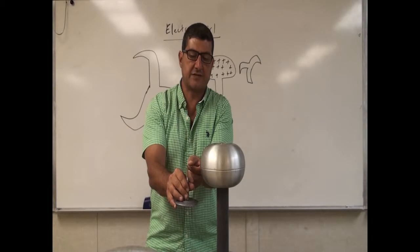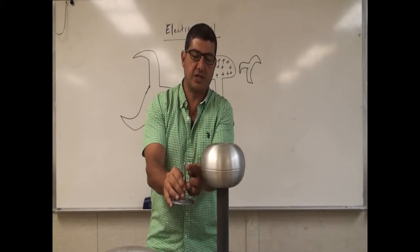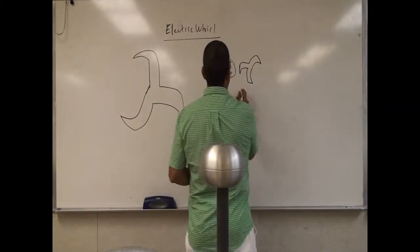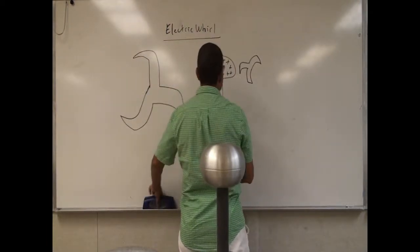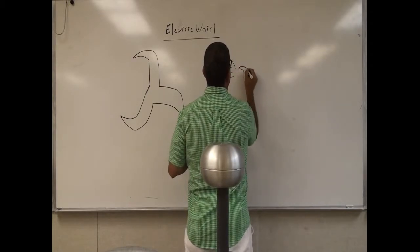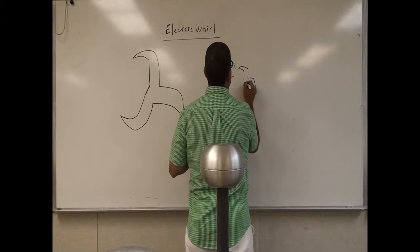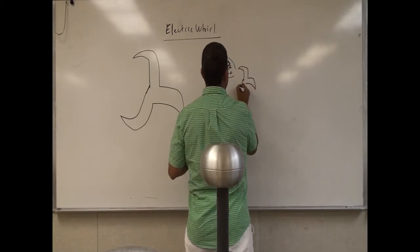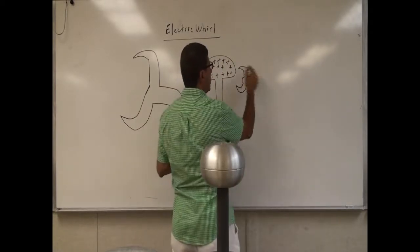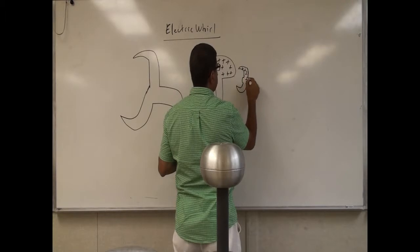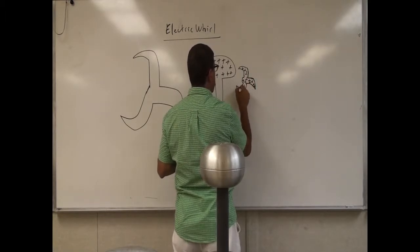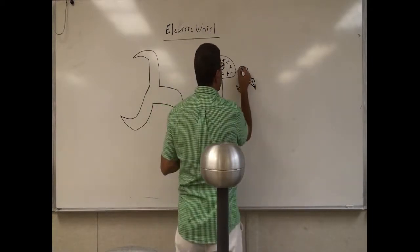But as soon as I tilt it a little bit so that the pointy side is facing the Van de Graaff generator, and you turn it so that the pointy side faces it — what will happen? The positive Van de Graaff generator will ionize the electric world so it'll become positive, but predominantly the place that gets the most charge is the pointy end.